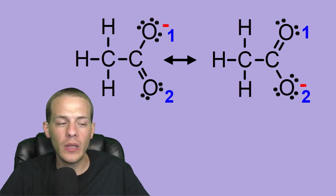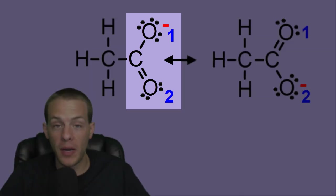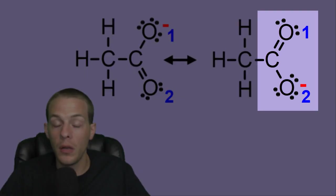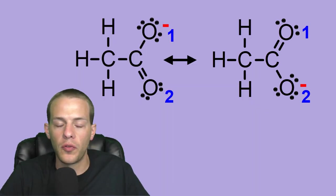And in the structure on the left, oxygen one has three lone pairs, a single bond to the carbon and a minus one formal charge, while the oxygen two has two lone pairs, a double bond and a zero formal charge. And in the structure on the right, it's the opposite. Oxygen one is the one with the double bond and two lone pairs and zero formal charge. And oxygen two is the one with three lone pairs, a formal charge of minus one and the single bond to the carbon atom. So why do we have two different structures to represent the same thing? That is the question.